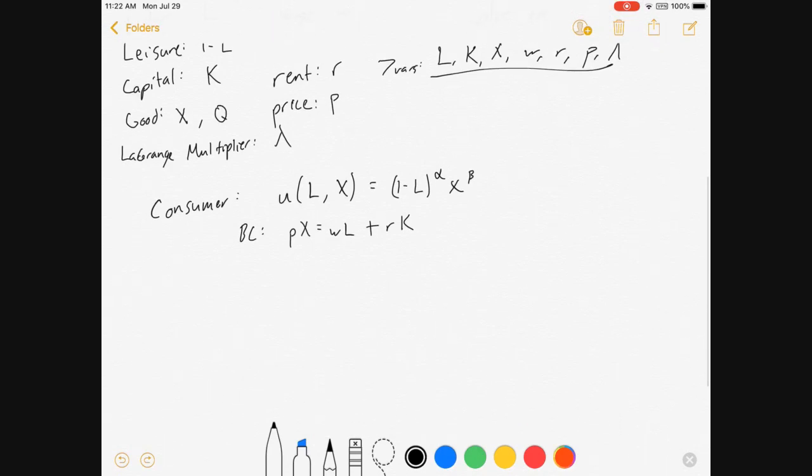So how do we go about solving this? Let's set up our Lagrangian equation. That's 1 minus L to the alpha, X to the beta equals lambda times PX minus WL minus RK.